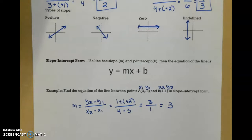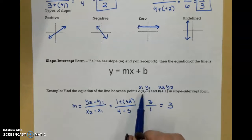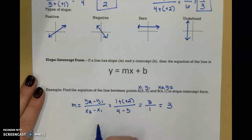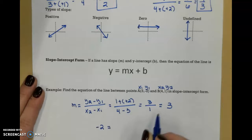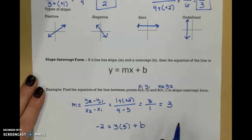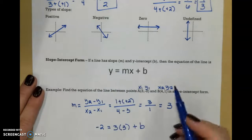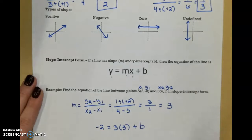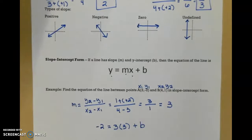Now I need to solve for my y-intercept, and I do that by plugging in one of these points. I'm going to use point A. So I plug in my y value, negative 2, equals my slope 3, times my x value 3, plus b. I took the equation y equals mx plus b, plugged in for y, m, and x, and now I'm solving for b. Negative 2 is equal to 9 plus b. I subtract 9 on both sides, and I get that b is equal to negative 11.